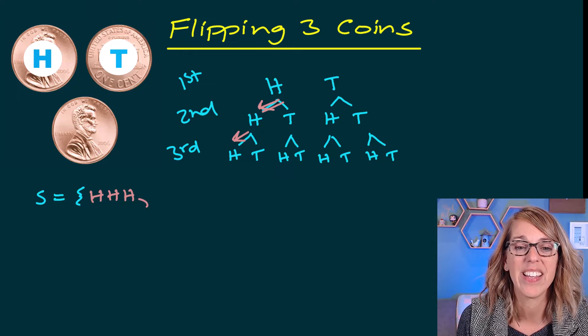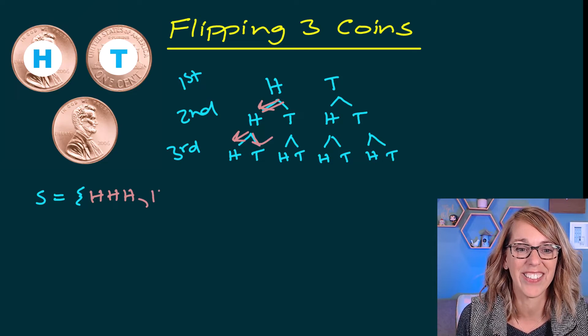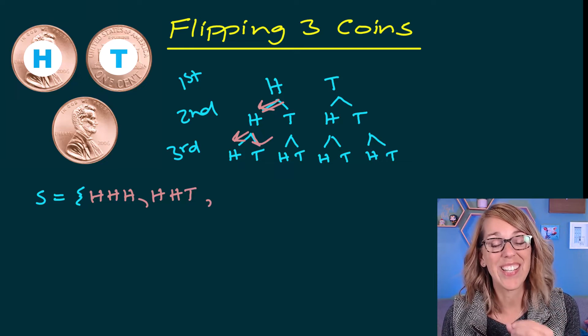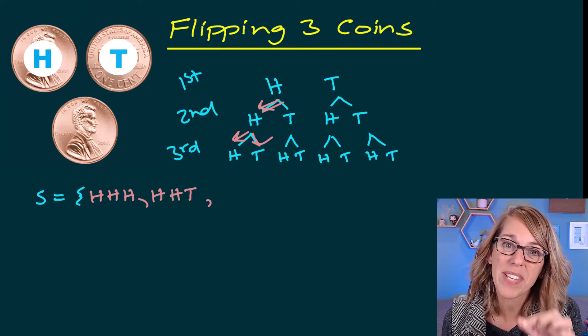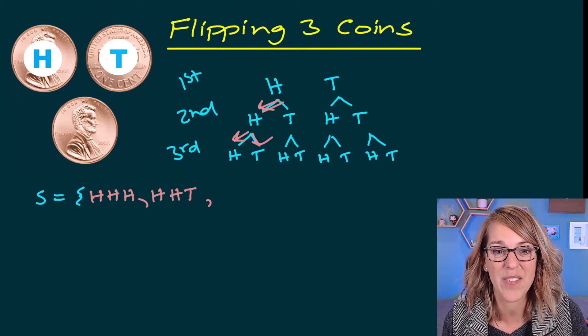And then the second one would be head, head, tail. The nice thing about the tree diagram is you don't have to write them all out. You can grab each of the outcomes by following the branches down.